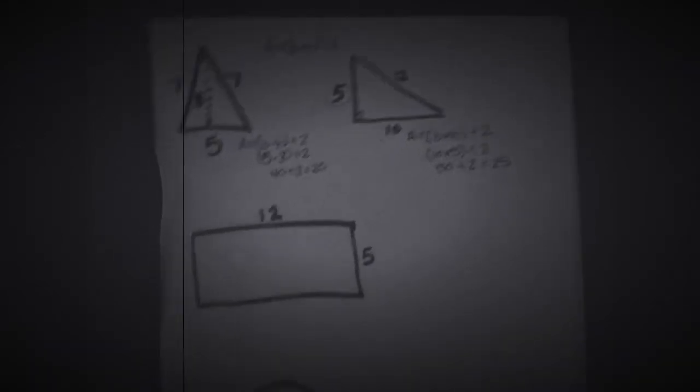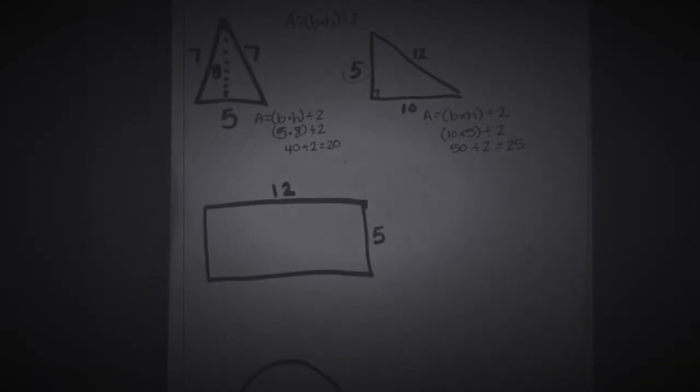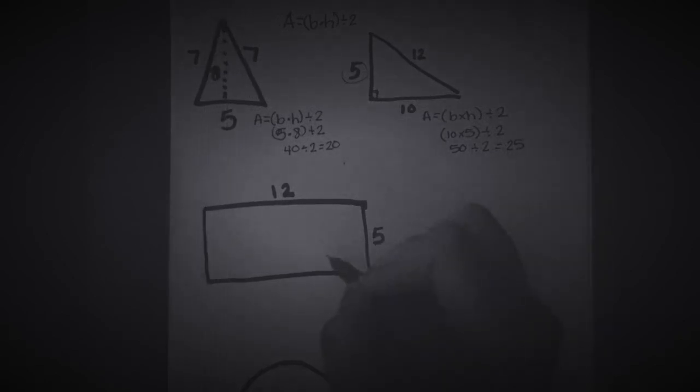Moving on to practicing with parallelograms. Do remember that area for parallelograms is length times width. With area, you are only dealing with the two numbers, so we have length times width: 12 times 5, which equals 60. That's our area.